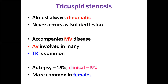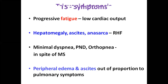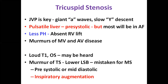In TS, progressive fatigue due to low cardiac output and symptoms of right heart failure occur. Whenever there is peripheral edema and ascites out of proportion to pulmonary symptoms, think of tricuspid stenosis. JVP is the key — prominent with a slow wide Y descent. There may be pre-systolic pulsation in the liver, but most often patients have atrial fibrillation so these findings may not be present. The classical finding of tricuspid stenosis includes loud T1, opening snap, and murmur heard in the lower left sternal border — all may be mistaken for mitral stenosis. The key differentiating point is inspiratory augmentation of the murmur, which may be pre-systolic or mid-diastolic.